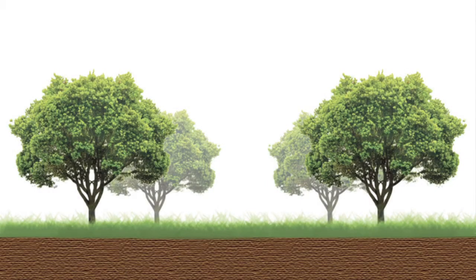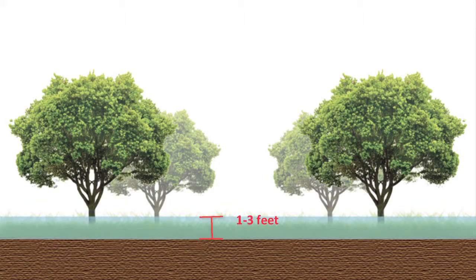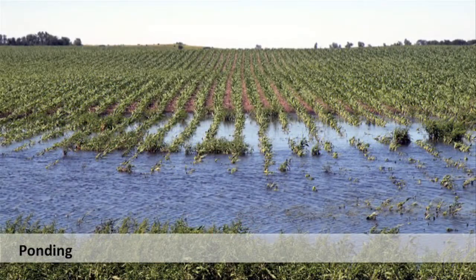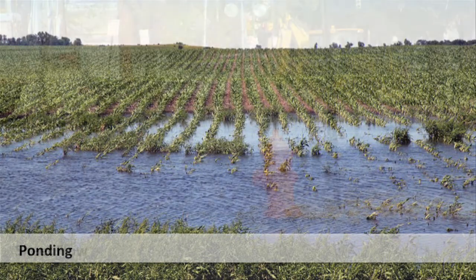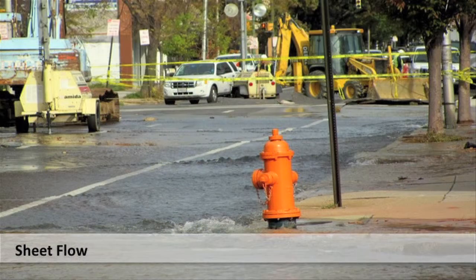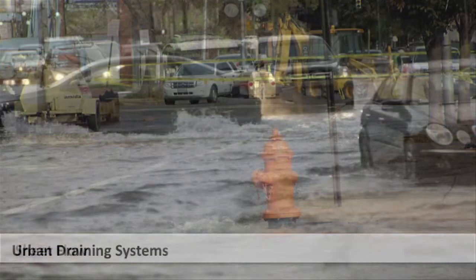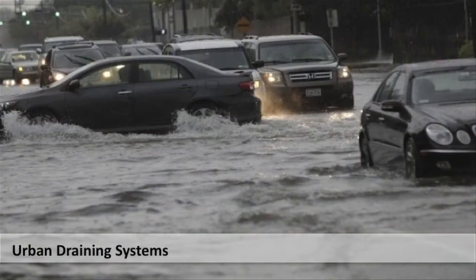The NFIP defines shallow flooding as flooding with an average depth of 1 to 3 feet in areas where a clearly defined channel does not exist. The most common shallow flooding situations are ponding, sheet flow, and urban drainage systems.